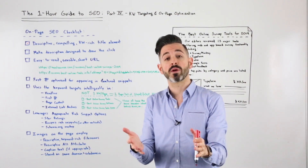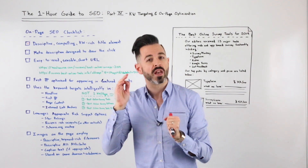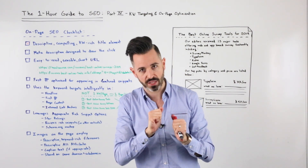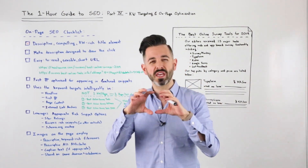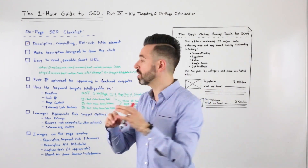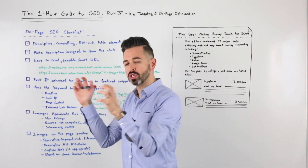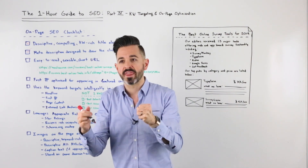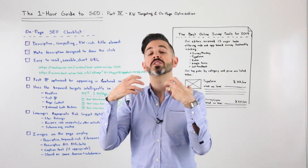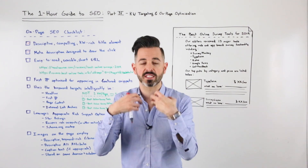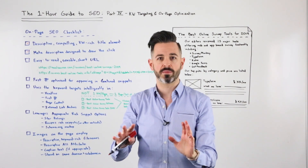Second is the meta description. This is still used by search engines, but not for rankings. Think of it like ad text — you are drawing the click. You want a description that tells people what's on the page and inspires them, incites them, makes them want to click on your result instead of somebody else's.